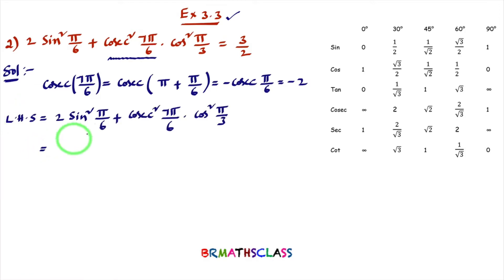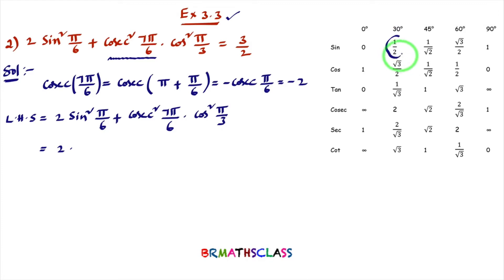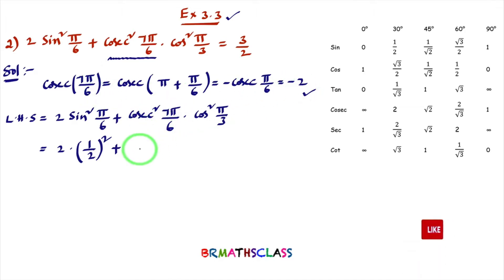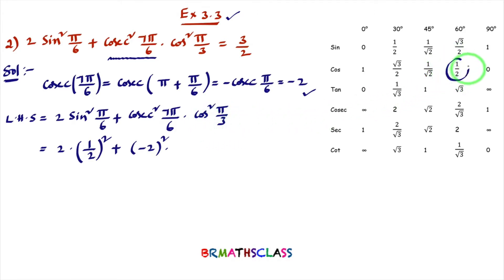Now I take LHS: 2 · sin²(π/6) + cosec²(7π/6) · cos²(π/3). We know sin(π/6) = sin 30° = 1/2, so sin²(π/6) = (1/2)². cosec(7π/6) = −2, so cosec²(7π/6) = (−2)² = 4. cos(π/3) = cos 60° = 1/2, so cos²(π/3) = (1/2)².